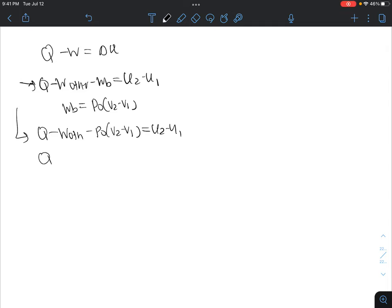So Q minus work other is equal to U2 plus P2V2 minus U1 plus P1V1. But also, H is equal to U plus PV. So this expression becomes Q minus work other is equal to H2 minus H1.